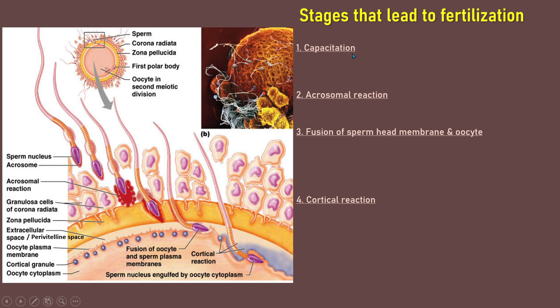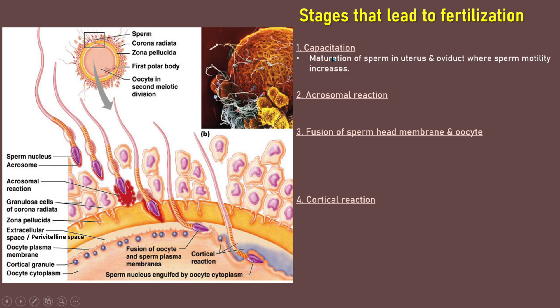In capacitation, it starts when sperm is discharged into the uterus. Inside the uterus, the sperm will become mature and will increase its motility — it will become more active, swimming actively from the uterus to the fallopian tube. So in capacitation, maturation of sperm occurs in the uterus and oviduct or fallopian tube, where sperm motility increases. The sperm is then ready to approach and contact the secondary oocyte at the oviduct.